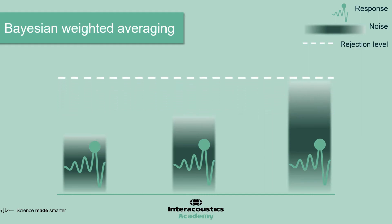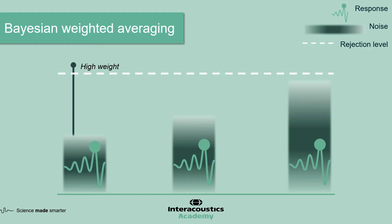The rejection level can be raised, as it is not as important. What happens here is that the excellent quality sweep is assigned a high weighting. The second sweep, which was barely acceptable previously, is now assigned a low weighting. And the third sweep is now also accepted, but assigned an even lower weighting. Those accepted sweeps now contribute a proportionately different amount to the overall averaged waveform, depending on the weighting that they have been assigned.